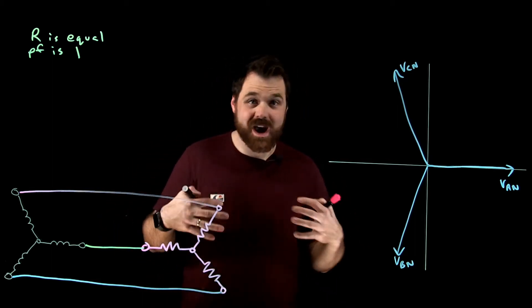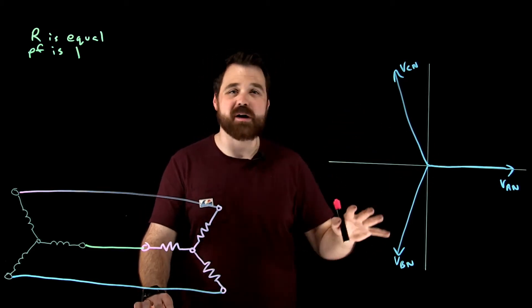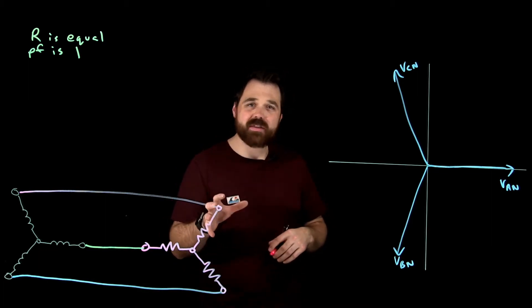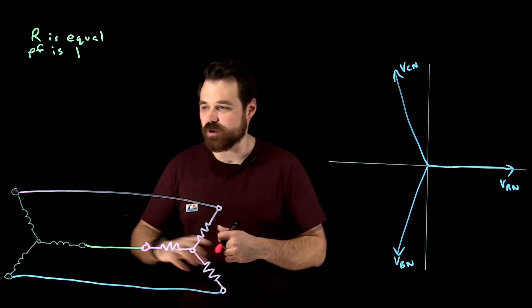Now, the way I always approach my phasor diagrams is when I do my phase voltages, then any of my currents, and then I go back with my line voltages for Y just so it doesn't get too cluttered. So what I want to think about is the relationship here. Let's talk about phase A first.